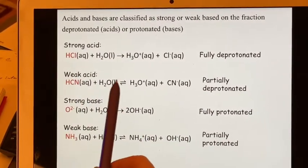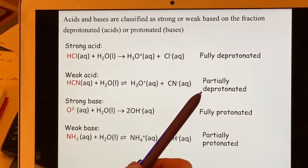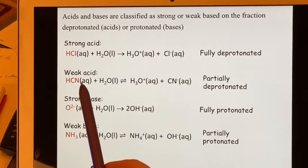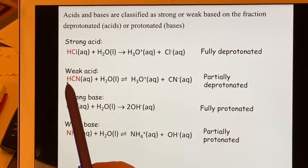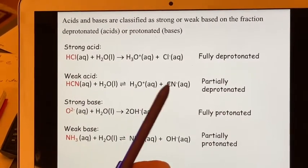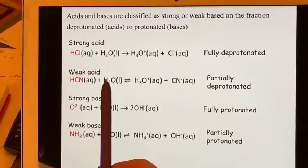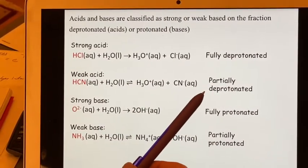A weak acid forms an equilibrium and we can say that it is partially deprotonated. Not all of these go over here because it's an equilibrium. But some of them, the H plus will leave giving you a CN minus. The H plus will add to the water and form the hydronium ion. But only some of them, not all of them.